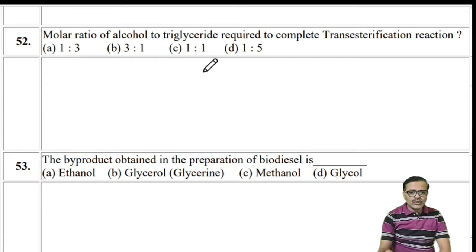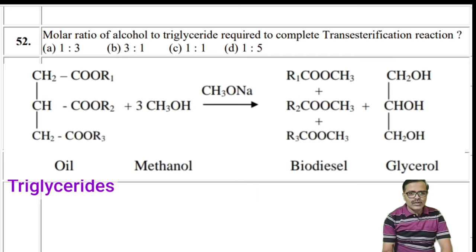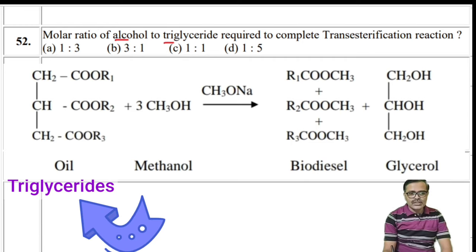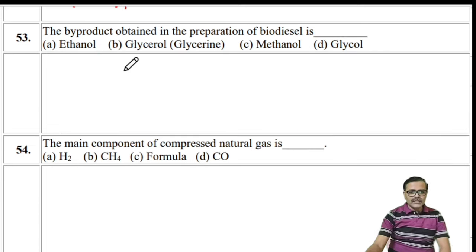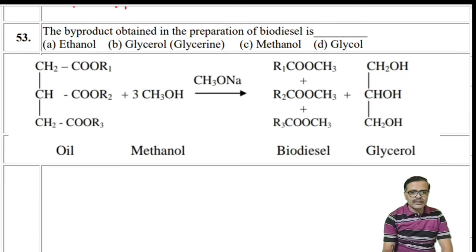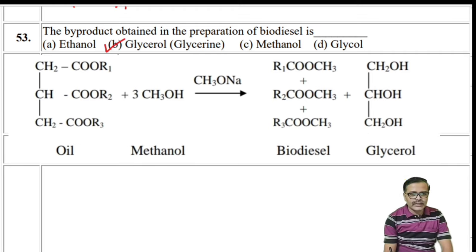Molar ratio of alcohol to triglyceride required to complete transesterification is 3:1. The byproduct obtained in preparation of biodiesel is glycerol. Main components of CNG are methane and ethane.